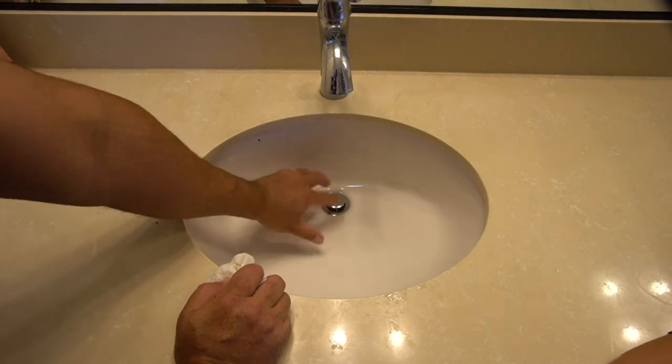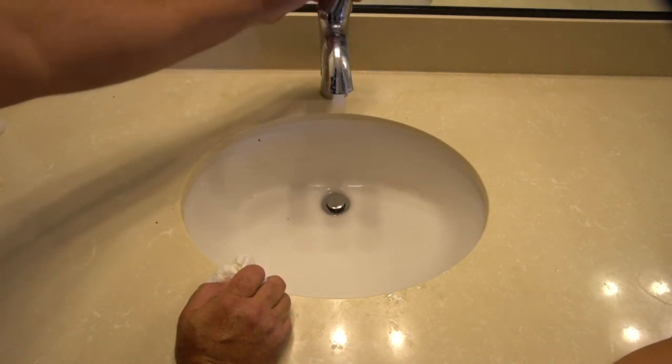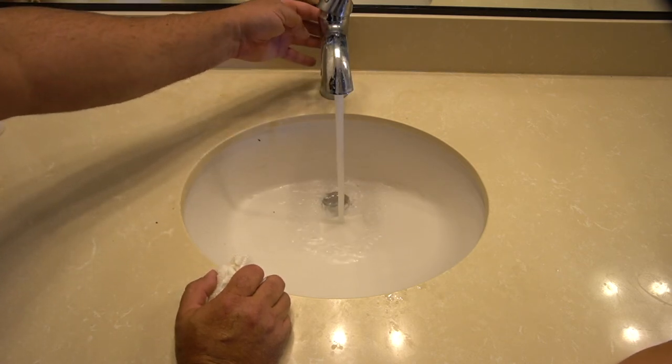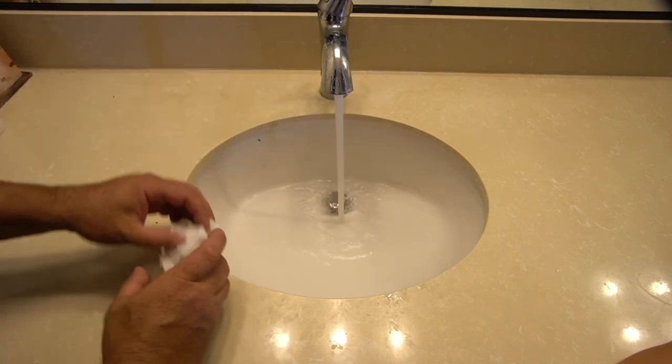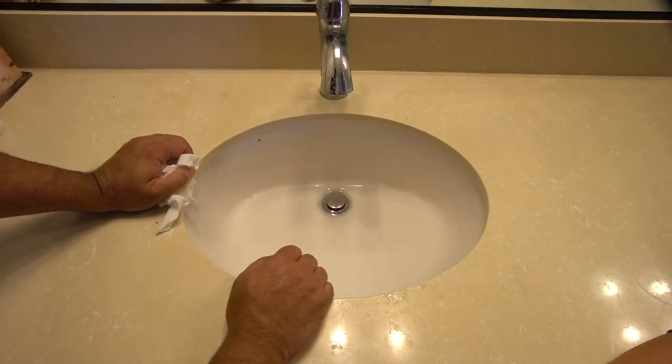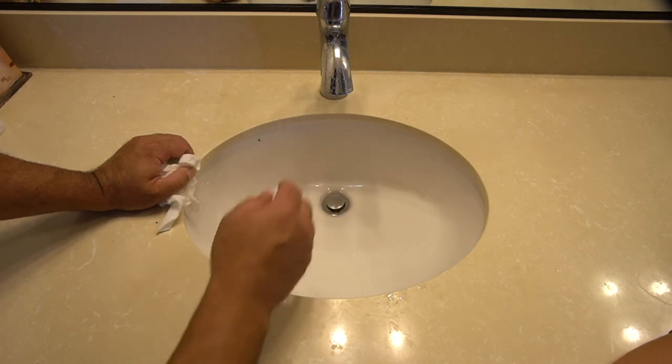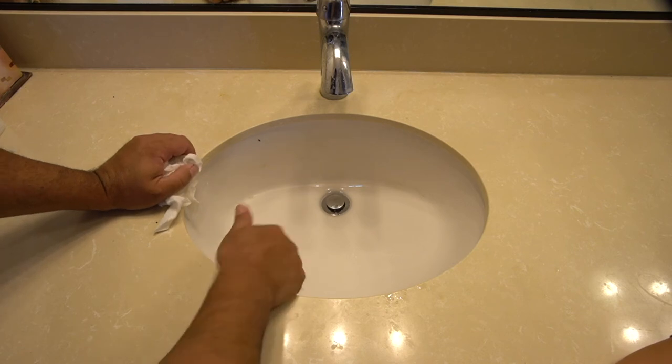So once you got the drain plug back in you want to make sure it works and then run some water through it. And while you're running the water through it then you want to go underneath and make sure there's no leaks and if you have no leaks then you're good.